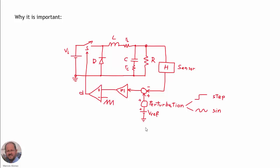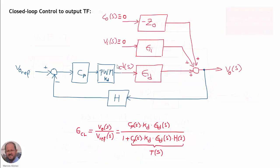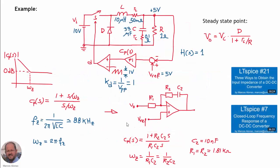Summarizing the previous video: the idea is to obtain the closed-loop response of a DC-DC converter. If we inject a perturbation at the reference, we want to know how the perturbation at the output of the converter will be. We saw the model of the converter in open loop with the schematics from previous videos, and we analyzed the operation of the converter in closed loop.